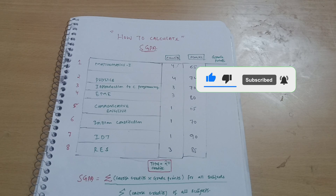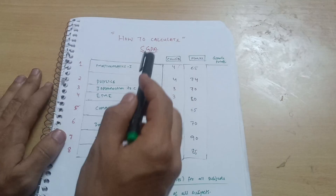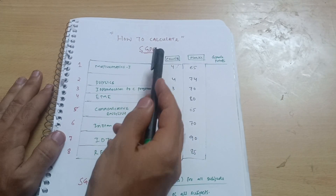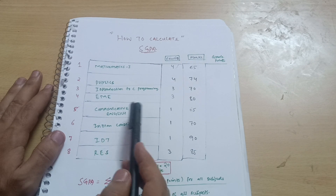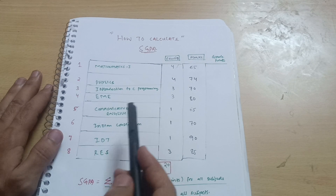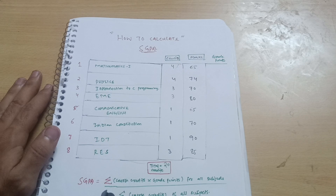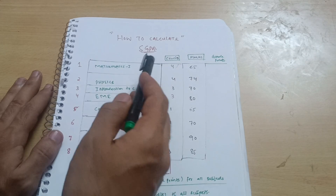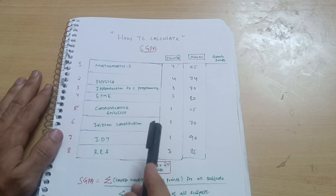It is better to calculate from the earlier semesters so that you will not find difficulties in higher semesters. SGPA is Semester Grade Point Average, and CGPA is Cumulative Grade Point Average — that is calculated at the end of your whole engineering journey. But as of now you have to calculate only SGPA.